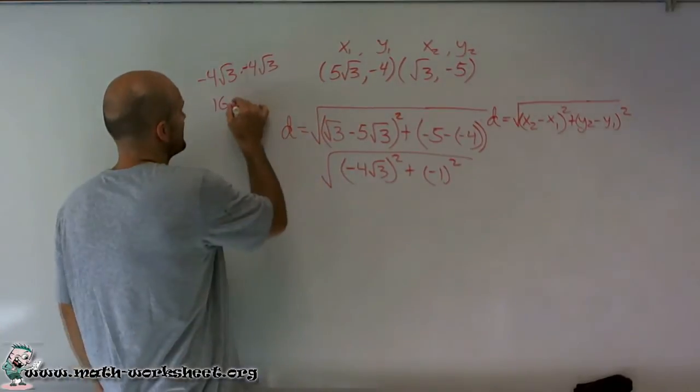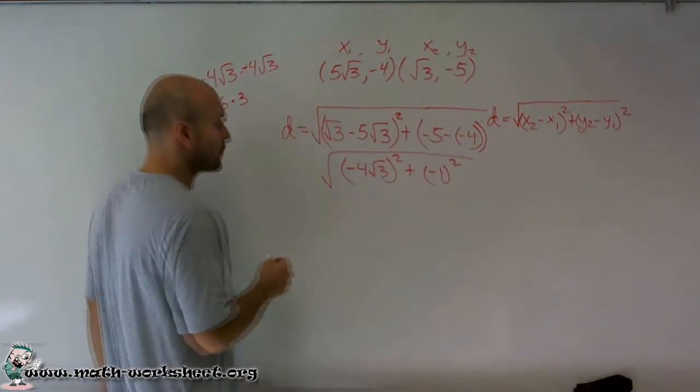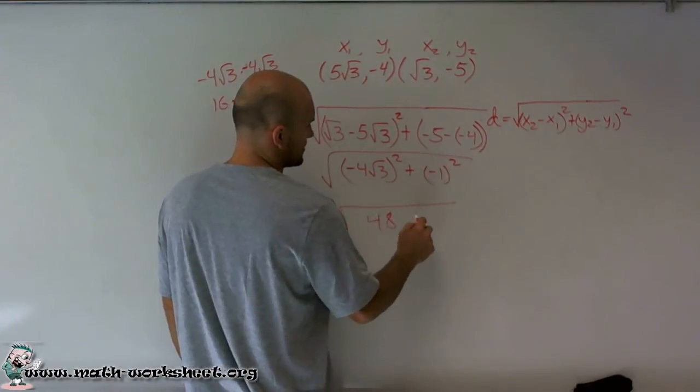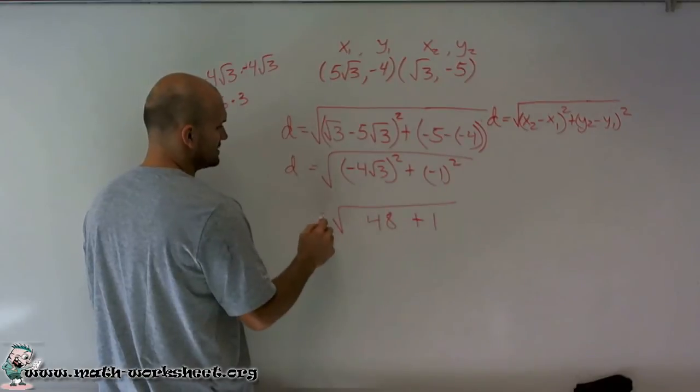3 times 16 is going to be 48. So I have 48 plus 1, and these all still equal the distance.